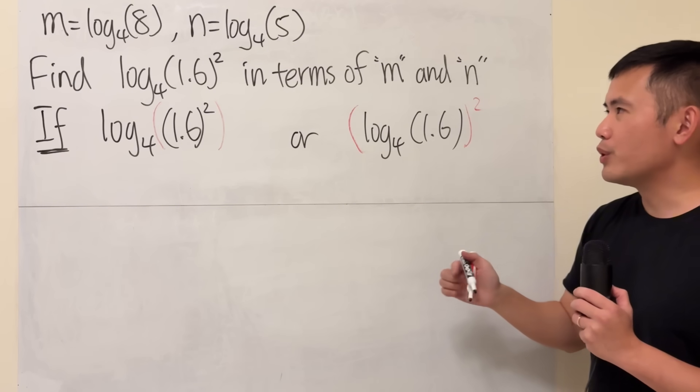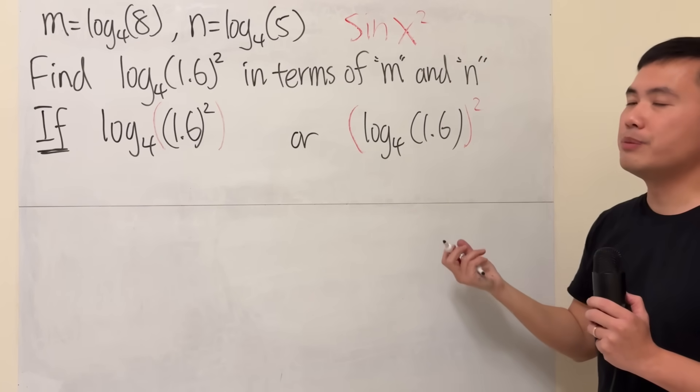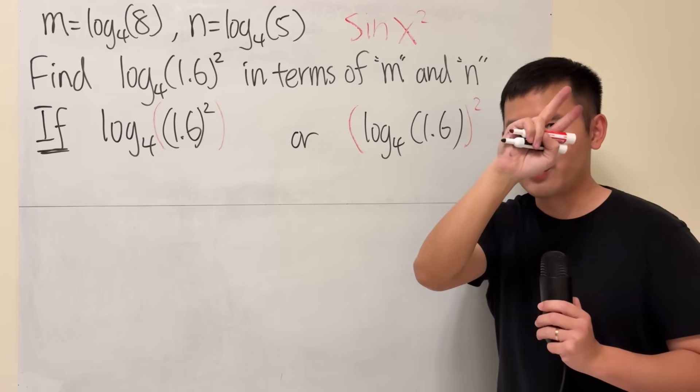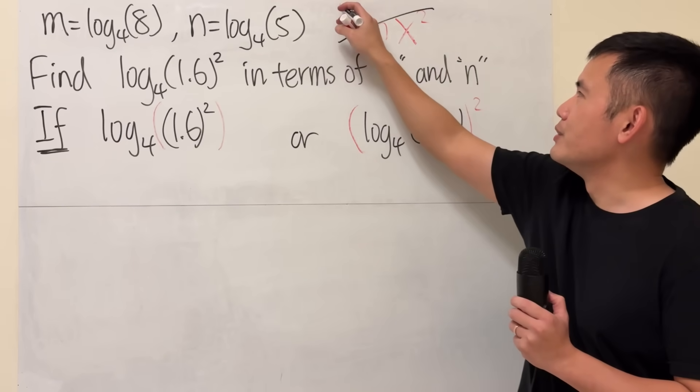It's very similar to when you are doing trig and you write something down like sin of x squared without using parentheses. Do you mean sin of x squared or sin of x squared? This right here is just not a good notation.